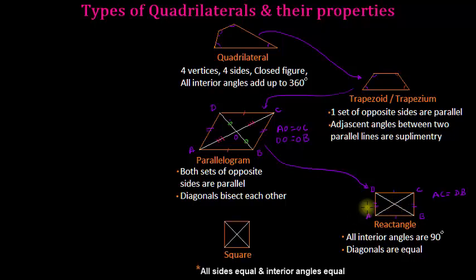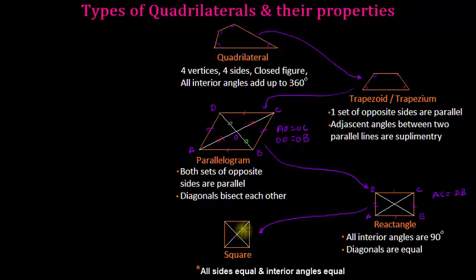If we make all sides of a rectangle equal, we get a square. A square is a special case of rectangle with all sides equal, all interior angles of 90 degrees, and both diagonals are equal and bisect each other — meaning the intersection point divides both diagonals into two equal parts.